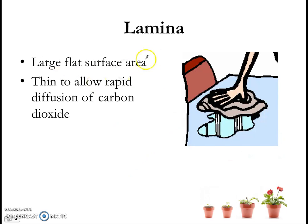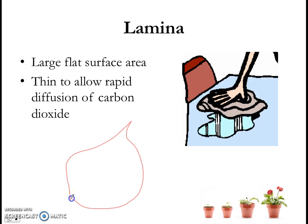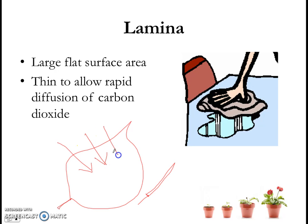Secondly, when you were reading about the lamina, you would have read that it has a very large surface area — large and flat. Why is it that leaves are large and flat most of the time, rather than small with not much surface area? Hopefully you realize that that's so that it can maximize the amount of sunlight absorbed — to maximize sunlight absorbed for photosynthesis.